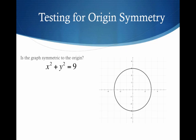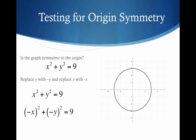Is this graph symmetric to the origin? In other words, if I fold over the origin, do I get the circle on top of itself? And we certainly do. We've already seen where we can replace x and y with negative x and negative y. Under the square, both negatives go away, and we get our equivalent function back to the original.